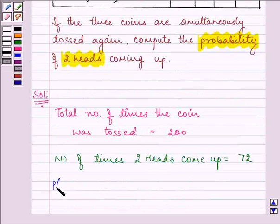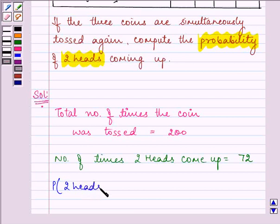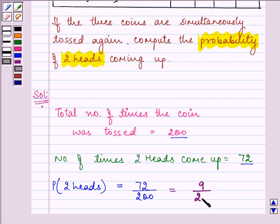So the probability that 2 heads are coming when we are tossing 3 coins simultaneously again, that is equal to 72 times out of this 200 times. And on simplifying, we have the answer as 9 by 25.